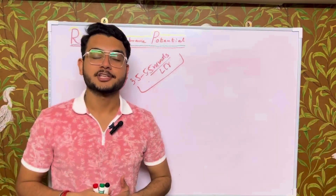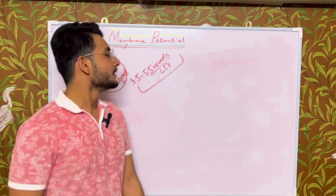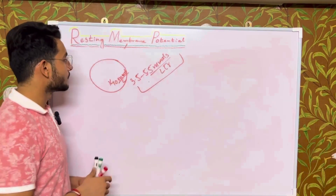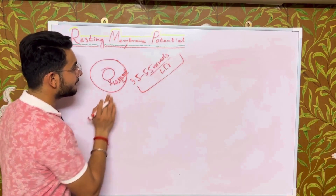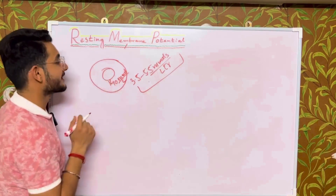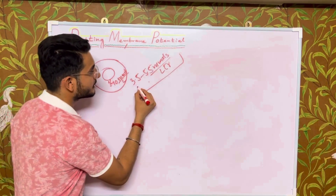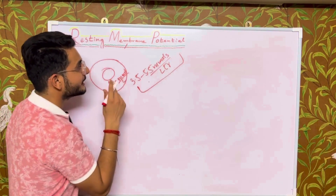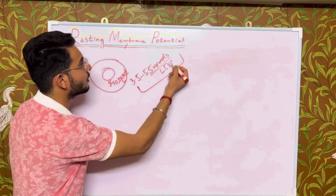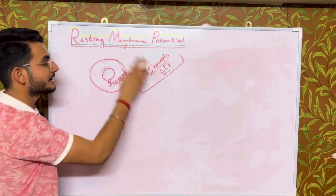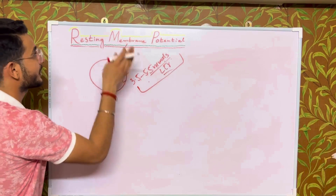Hello and welcome back to my YouTube channel. In this video we will be discussing the conditions which affect the resting membrane potential. We know that this is a cell having a nucleus. Within the cell the concentration of potassium is 140 millimoles per liter, whereas in the extracellular fluid the concentration of potassium varies from 3.5 to 5.5 millimoles per liter. If this concentration is not regulated, it can affect the resting membrane potential.